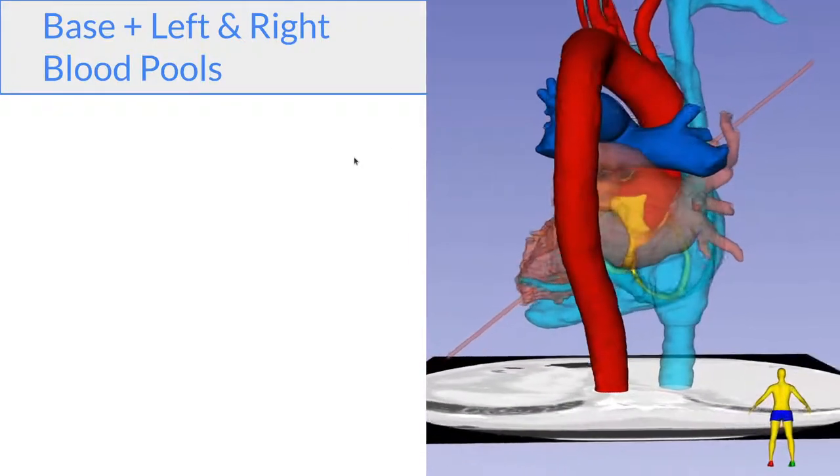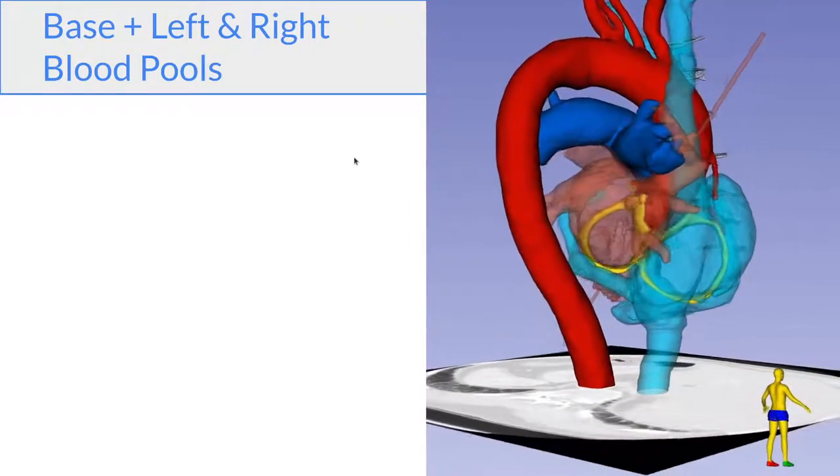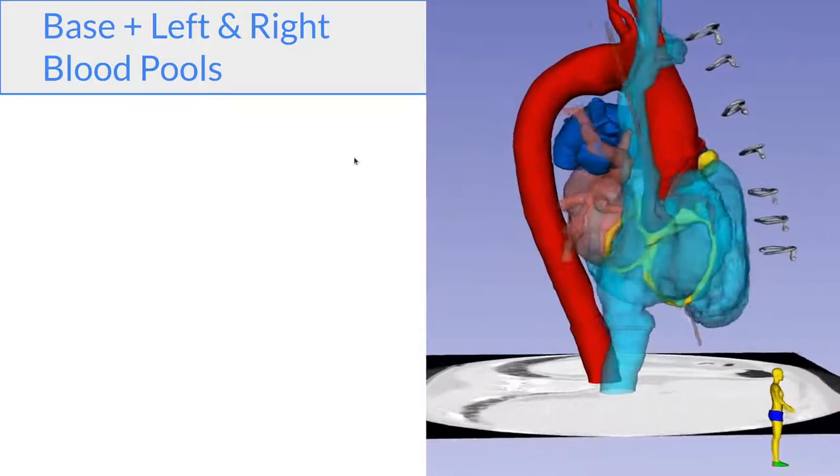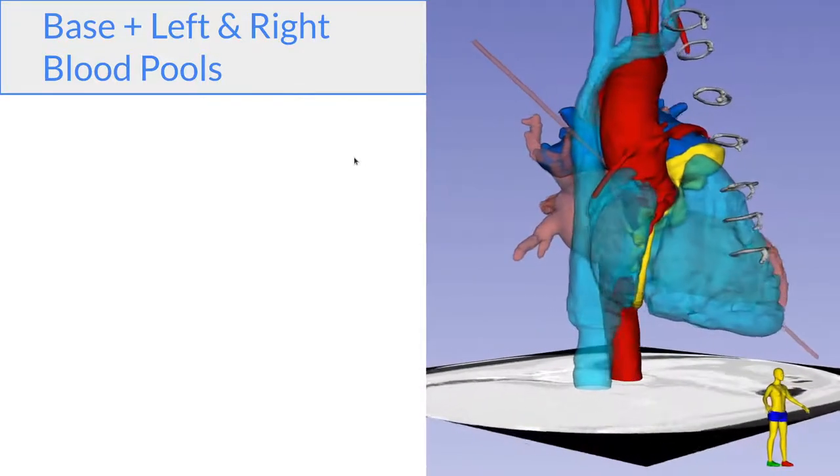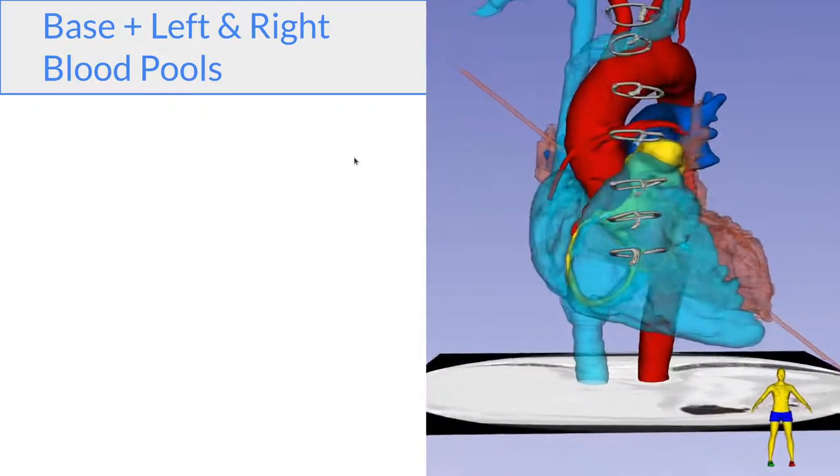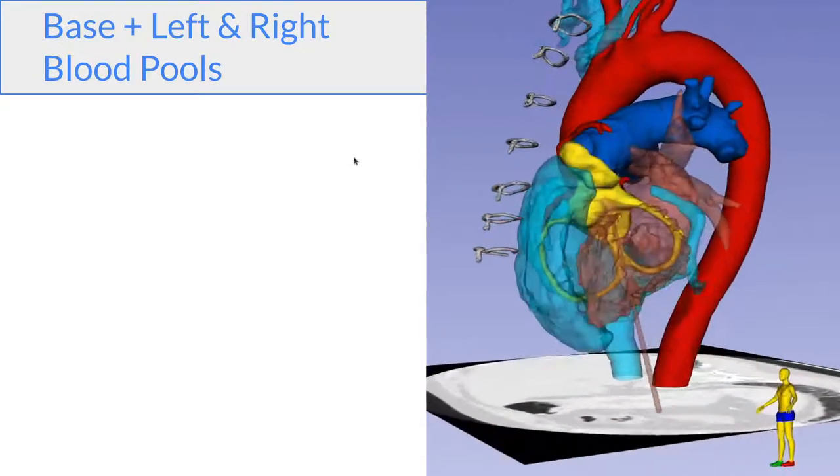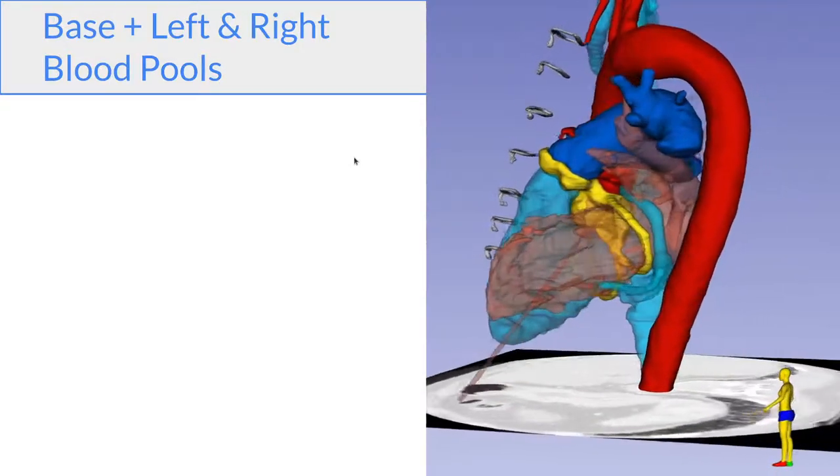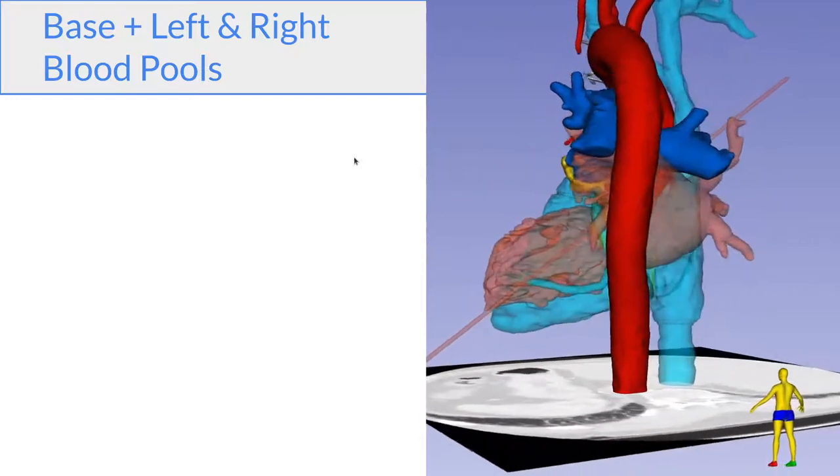So here we put everything together. It's a little bit overwhelming at first, but again, if you remember the previous figures where we did this piece by piece, you can see the right heart blood pool, the aorta, pulmonary artery, the left heart blood pool, all of them anchored to the heart base in the center.